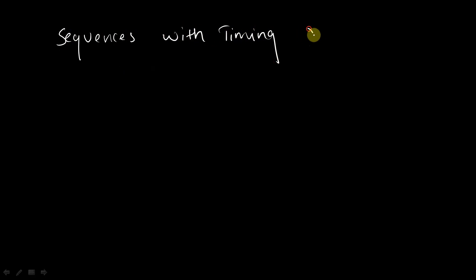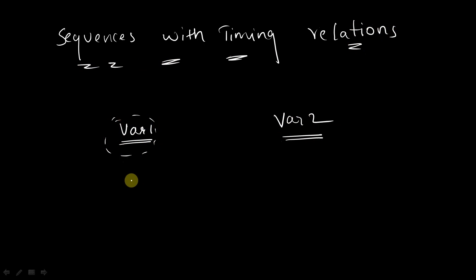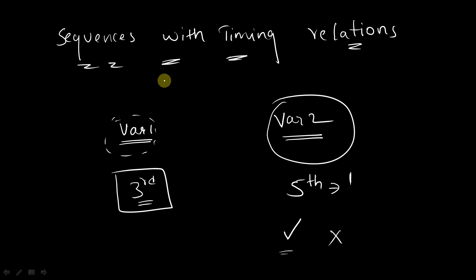So in this sequence, if we have two variables — variable one and variable two — let's say variable one becomes high at the third clock edge. Then, after two clock edges, your variable two should become high, that is in the fifth clock cycle. The particular assertion should get passed, or else it should get failed. If we have a timing relationship like this between two variables or between different complex sequences, we are going to deal with the hash symbol. We are going to represent these particular delays with two hashes.